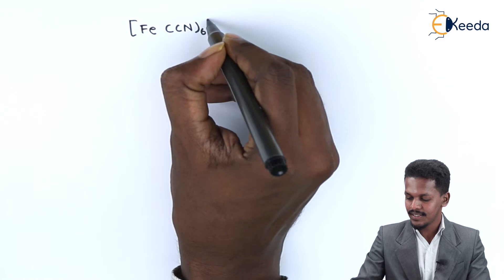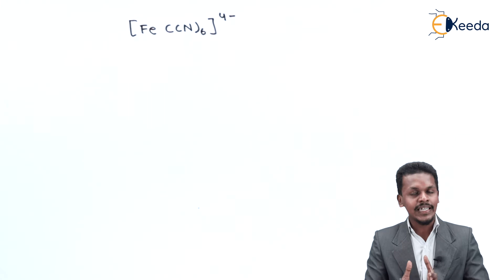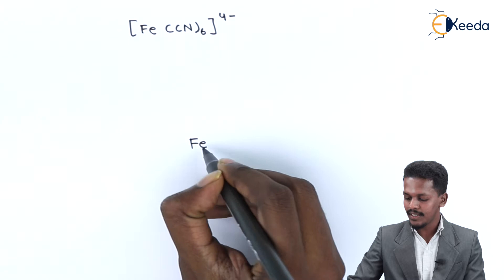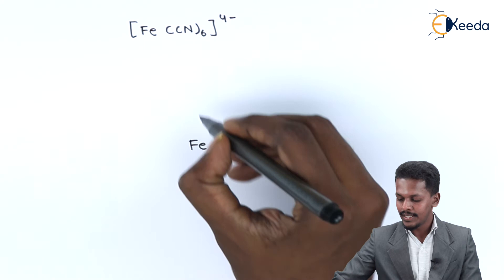Fe²⁺ will be present in the center while the six cyanide ligands occupy the space around it.